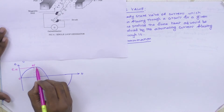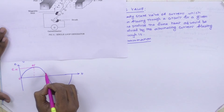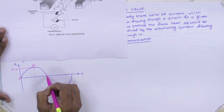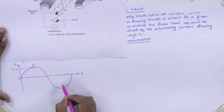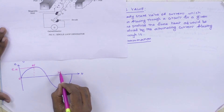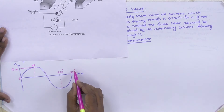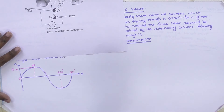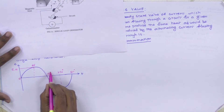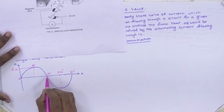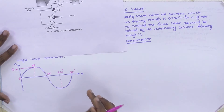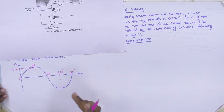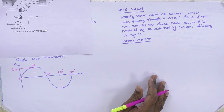Then the conductor continues rotating; the EMF reduces and returns to zero at 180° (vertical again). From 180°, it gives the negative half cycle. At 270°, it again reaches the maximum negative value, and at 360° it completes one cycle. The 0–180° portion is called the positive half cycle and 180–360° is called the negative half cycle. This is how alternating voltage or current is produced by the simple loop generator.